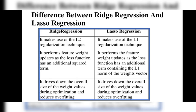The key differences: ridge regression uses L2 regularization while lasso regression uses L1 regularization. In ridge regression, the loss function has an additional squared penalty term, whereas in lasso regression the loss function has an additional term containing the L1 norm (absolute values) of the weight vector — no squaring. Both techniques reduce overfitting by constraining weight sizes, but the square term in ridge versus the absolute value in lasso is the core distinction.